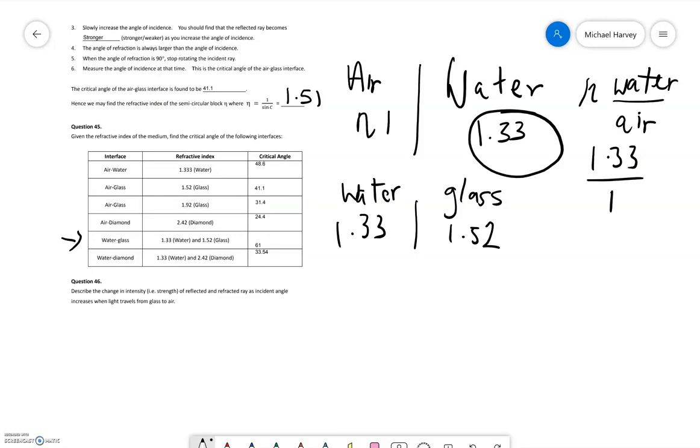So now the refractive index is going to be equal to 1.52 divided by 1.33, and that means we end up with n being equal to 1.14.